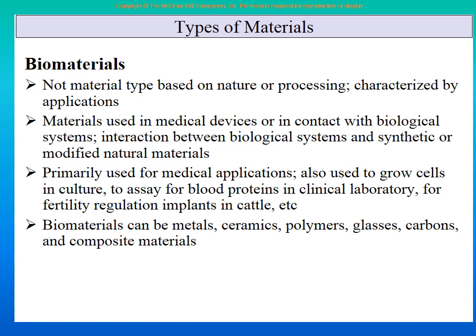Biomaterials are not natural biological materials. A biomaterial is an artificial material that can be used inside the body. For example, when a dentist rebuilds a broken tooth using an artificial material, after it is done, you cannot tell the difference between the original tooth and the engineered one. This artificial material used inside the human body — functioning like a biological material — is called a biomaterial.